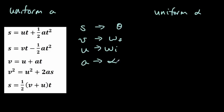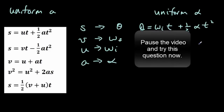The only difference is in the physical quantities themselves. Our first transformed equation is that angular displacement equals initial angular speed times t plus one-half angular acceleration times t squared. Pause the video and try to write down the rest of the equations, then come back for the answers.